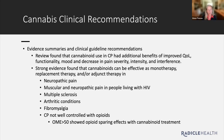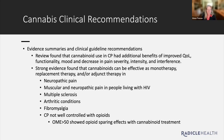A recent article on cannabis clinical recommendations found that cannabinoids used in chronic pain had additional benefits of improved quality of life, functionality, mood, and decreased pain severity, intensity, and interference. There was strong evidence that cannabinoids can be effective as a monotherapy, as a replacement therapy, or as an adjunct therapy in neuropathic pain, muscular and neuropathic pain in people with HIV, multiple sclerosis, arthritic conditions, fibromyalgia, and chronic pain not well controlled with opioids.